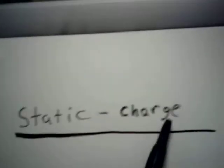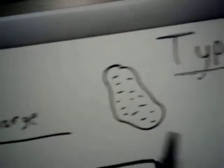First type we've already talked about is static. And it's just charged. There's a body and it has all these negative charges. It doesn't flow, it's static.